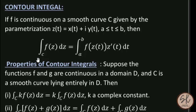Hello everyone. Today's topic is contour integral. If f is continuous on a smooth curve C given by the parameterization z(t) = x(t) + iy(t), where t is greater than or equal to a and less than or equal to b, then the integration of f along the smooth curve C equals the integration from a to b of f(z(t)) · z'(t) dt.